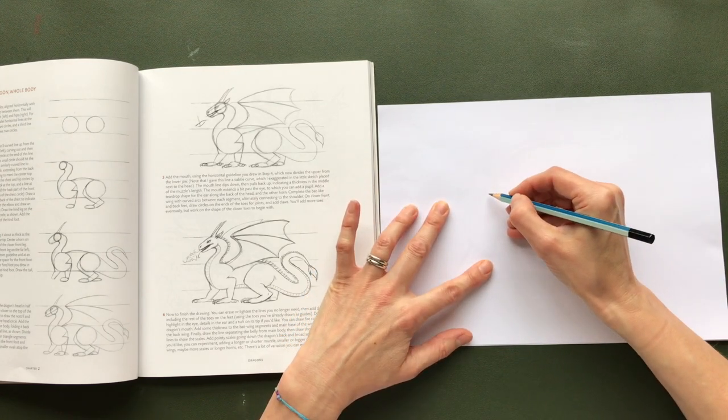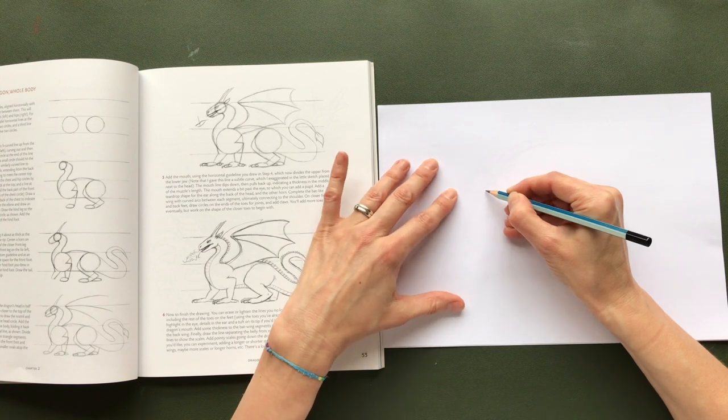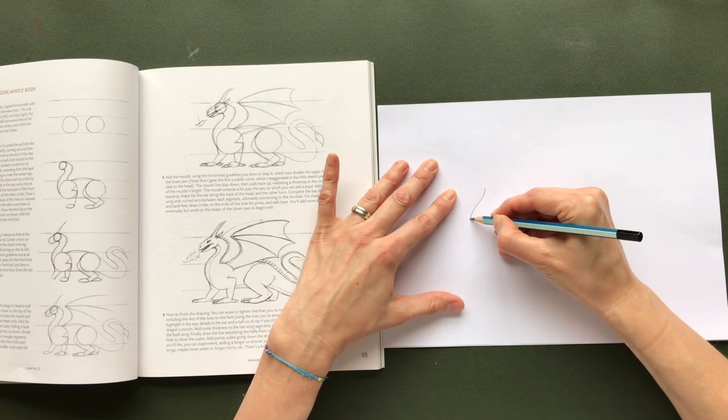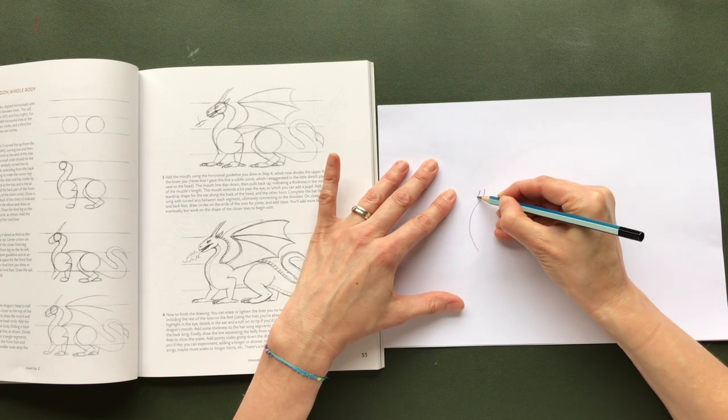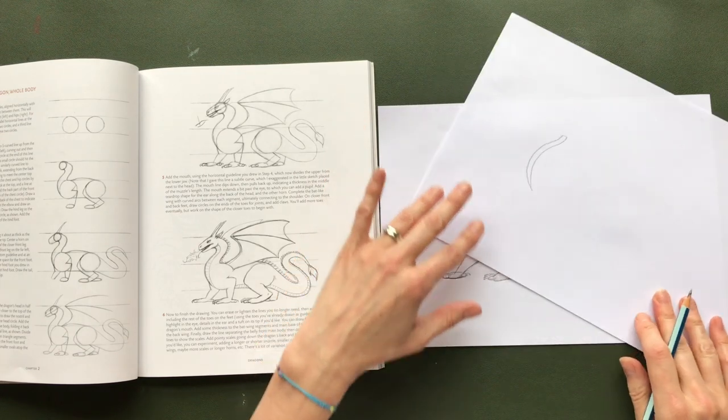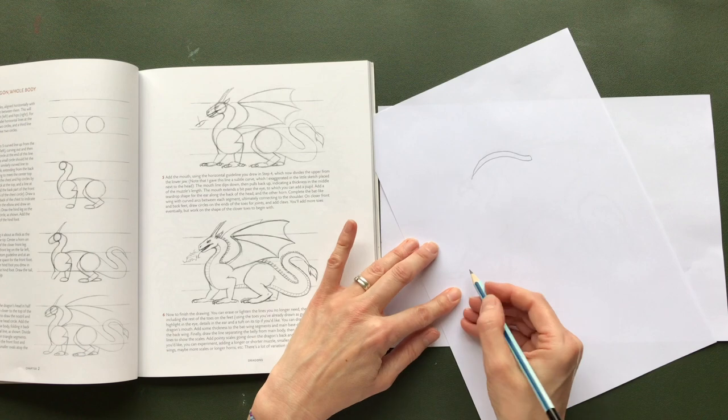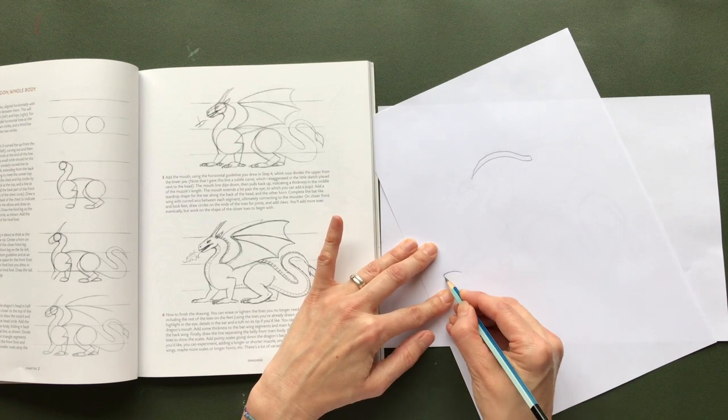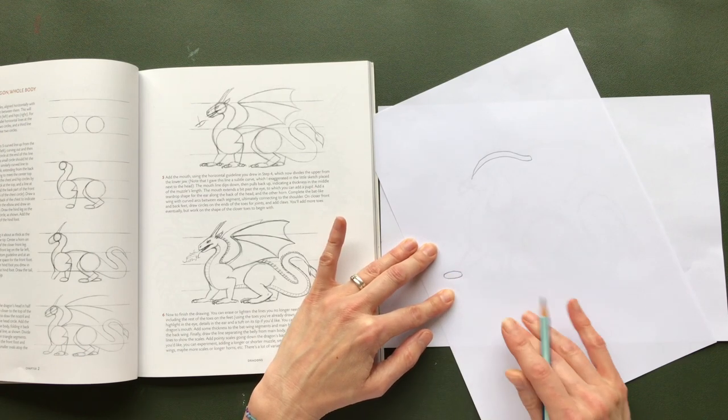But what I would like you to do is to start seeing different shapes and then maybe transfer them around your page.